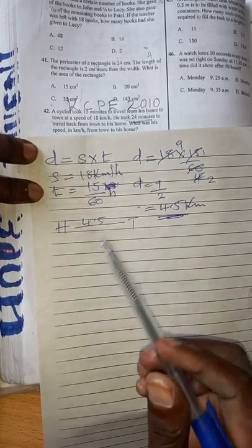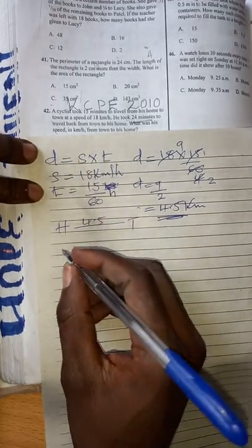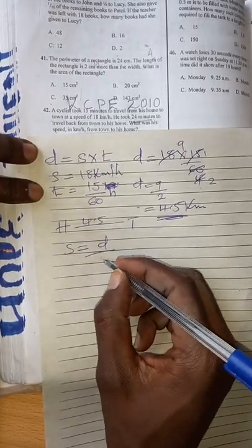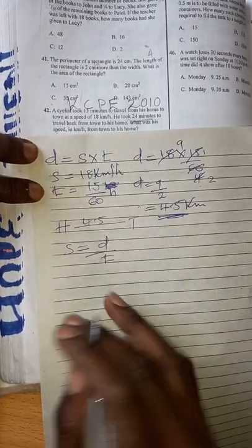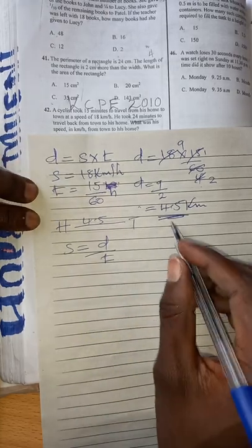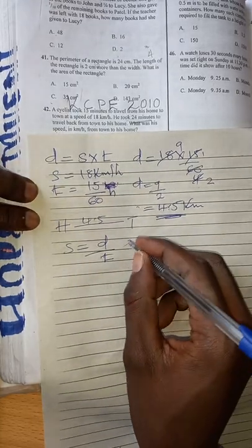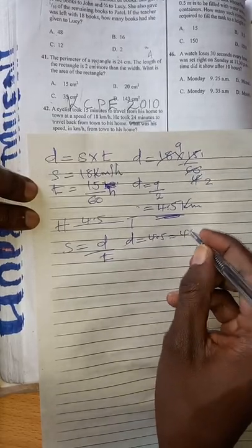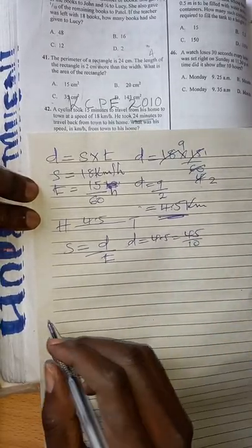So what do you do to get the speed? To get speed, speed equals distance over time taken. So what is the distance? 4.5. Distance is 4.5, which is the same as 45 over 10. What is time?